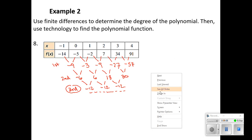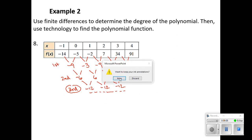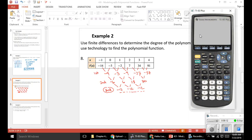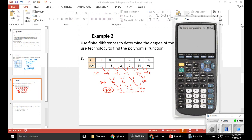Now let's use the calculator to come up with that function. I've changed the resolution, so I hope the calculator is a little bit easier for you to read. We want to enter the points in our stat menu, so stat, and then I hit enter when it said edit. My x values, -1, 0, 1, 2, 3, 4. And then the y values that go with them, -14, -5, -2, 7, 34, 91.